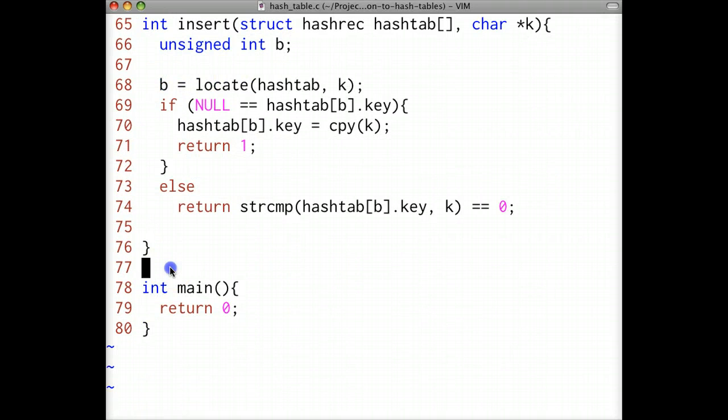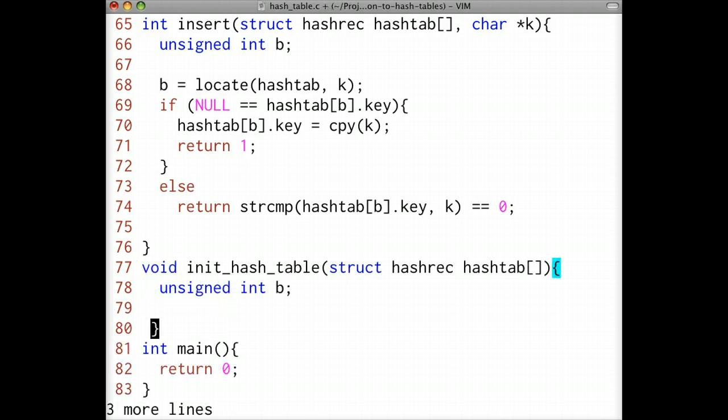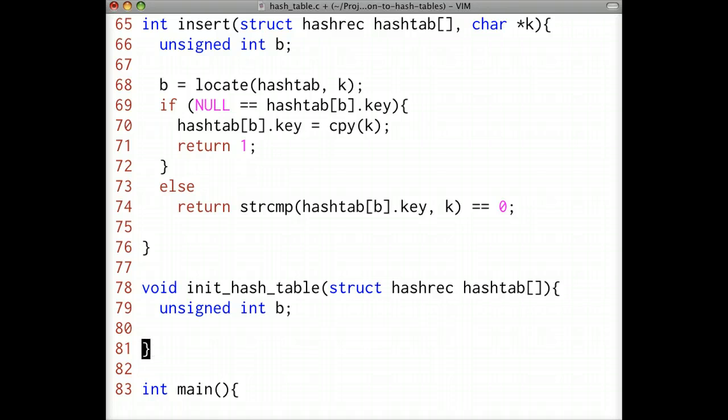Our final function is the init hash table function. This function takes a hash table as input and sets all the bucket keys to null. This way we can identify empty buckets within the hash table.